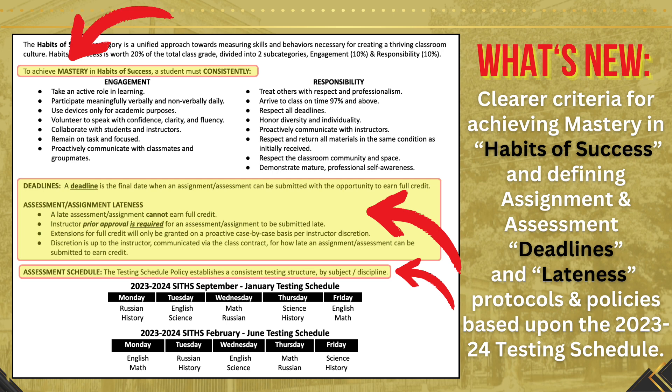The testing schedule policy establishes a consistent testing structure by subject discipline, where each core discipline has the opportunity for two full period assessments within a week's time. We will rotate the schedule at the beginning of each fall and spring term.